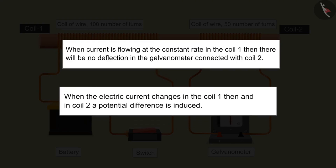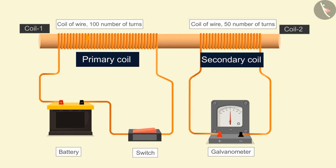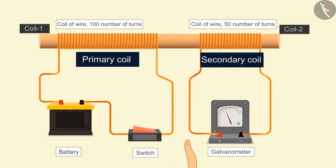When the electric current changes in coil 1, a potential difference is induced in coil 2. Coil 1 is known as the primary coil and coil 2 is known as the secondary coil. When the current changes, there is a change in the magnetic field around coil 1, and due to this the magnetic field through the secondary coil also changes, which induces an electric current in the circuit.